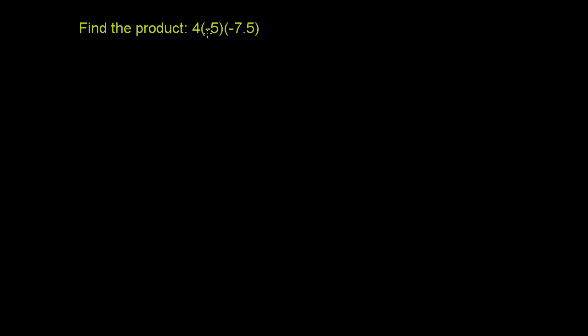Find the product 4 times negative 5 times negative 7.5. So we're just multiplying three numbers right here. Some are positive, some are negative. We could actually do this in any order, but let's just go left to right.